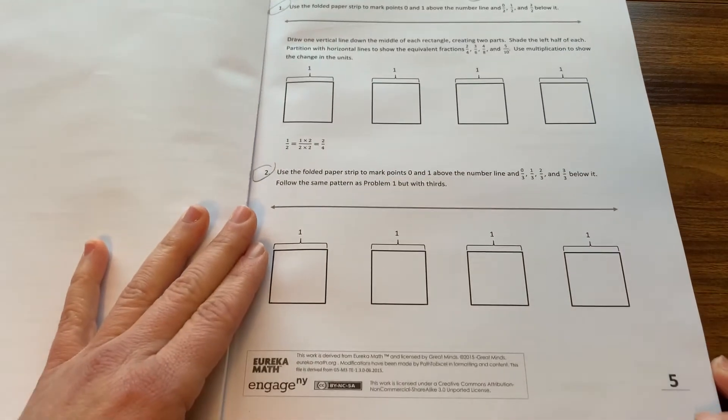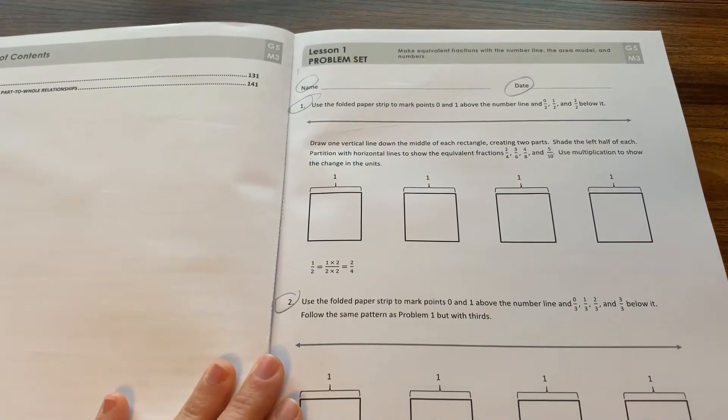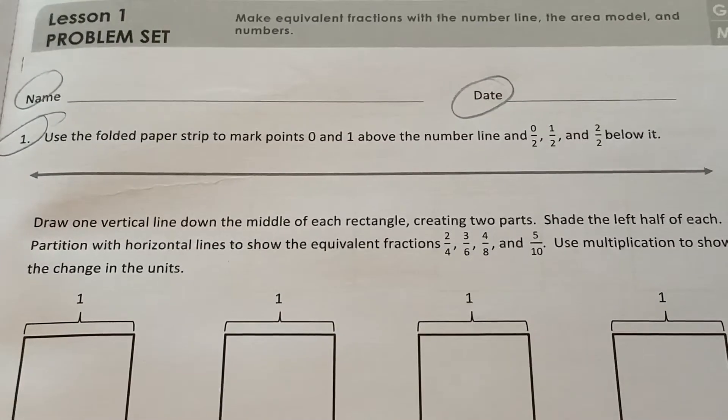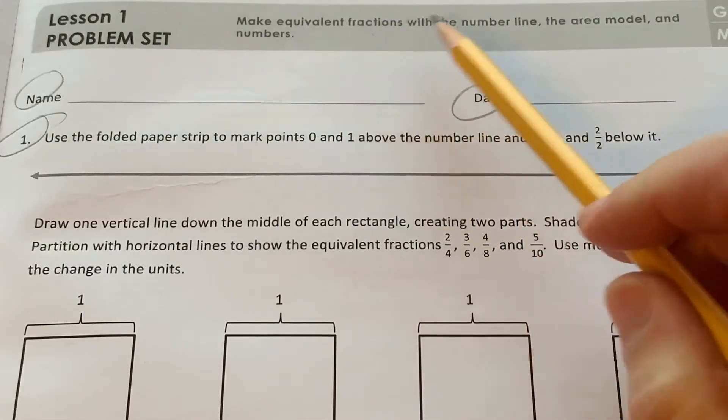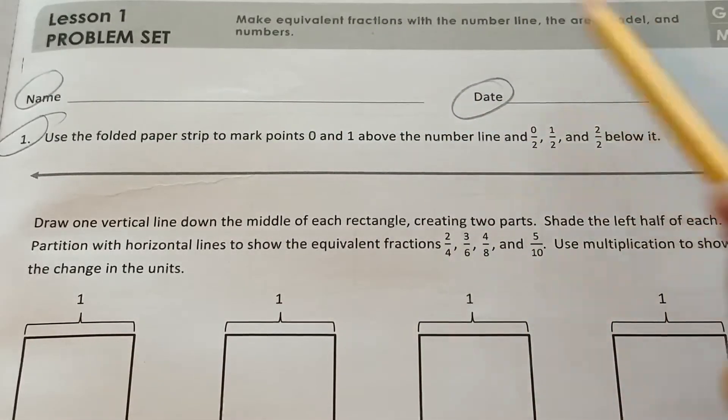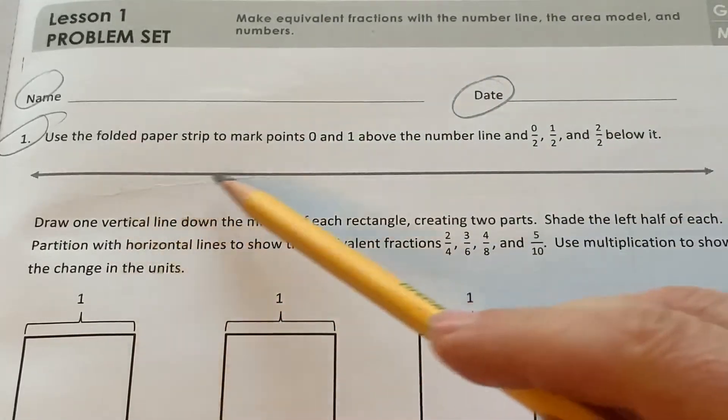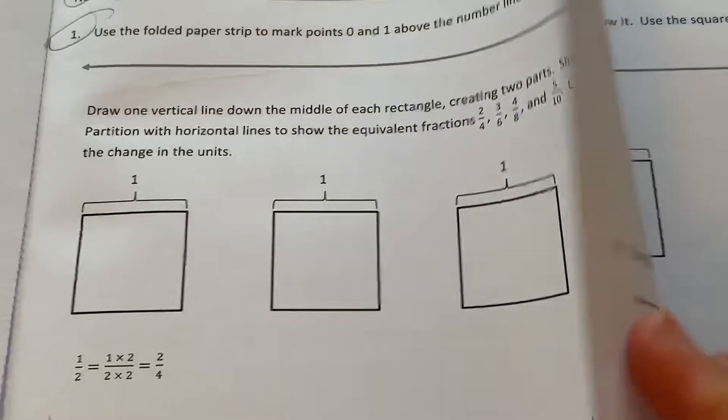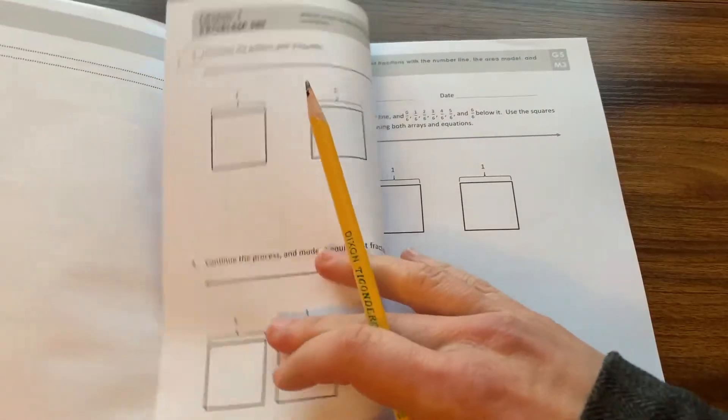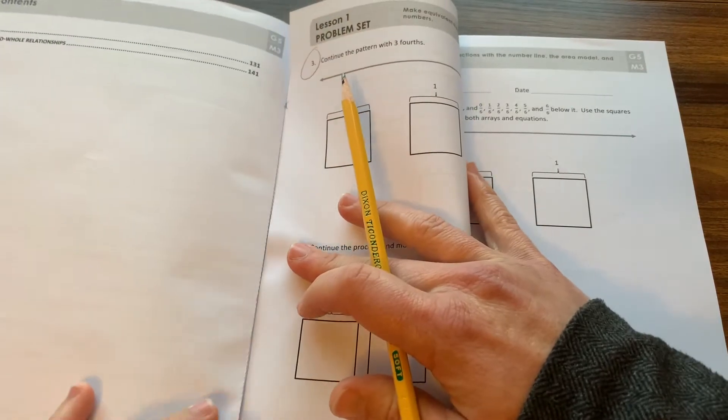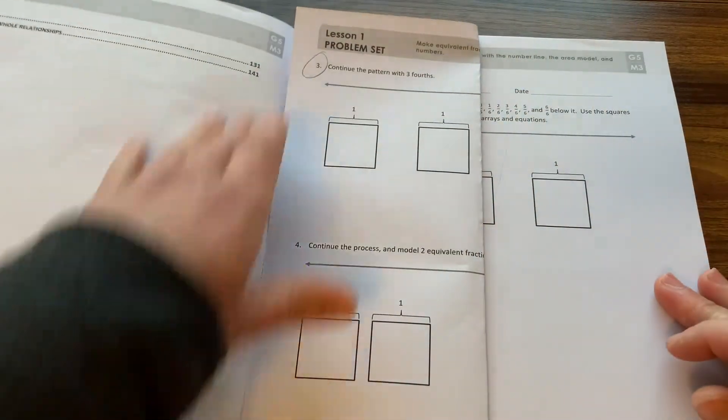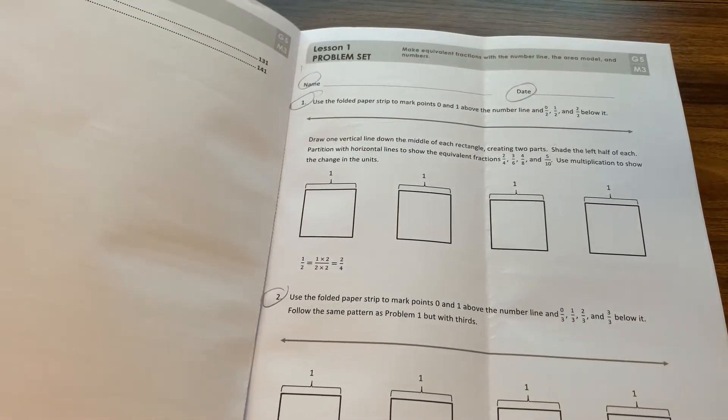I am on page 5 and I'm going to read the objectives. Make equivalent fractions with the number line, the area model, and numbers. So this is the number line, these are the area models, and these are the numbers. Go ahead and fold your paper in half like this. Line it up with the end here and do a light crease. That will just help us with the number lines, to get the middle. Open it back up and let's start the first problem.